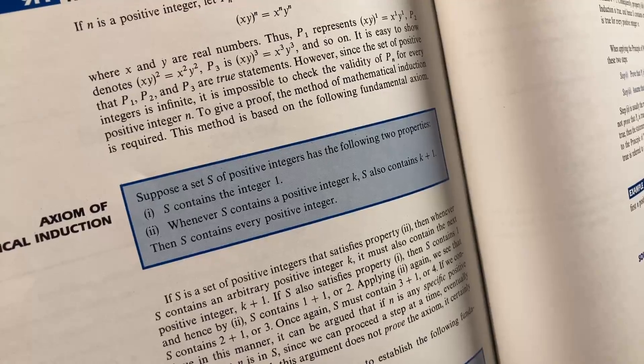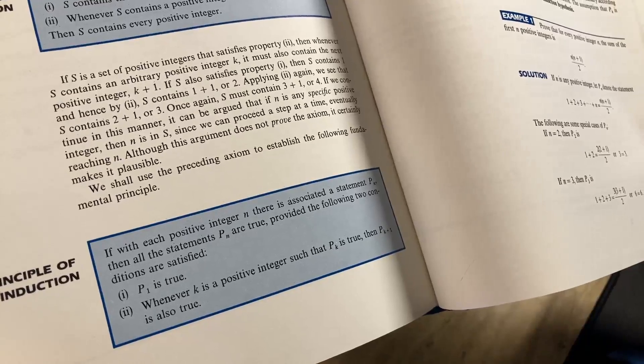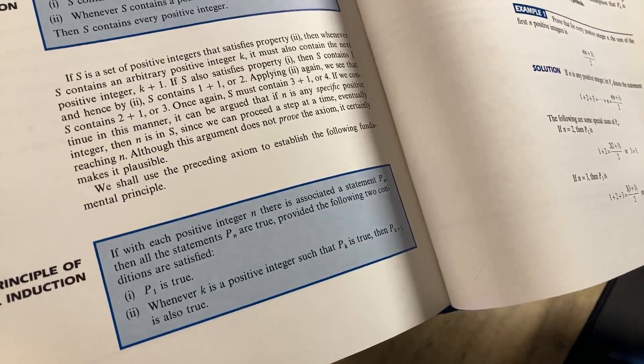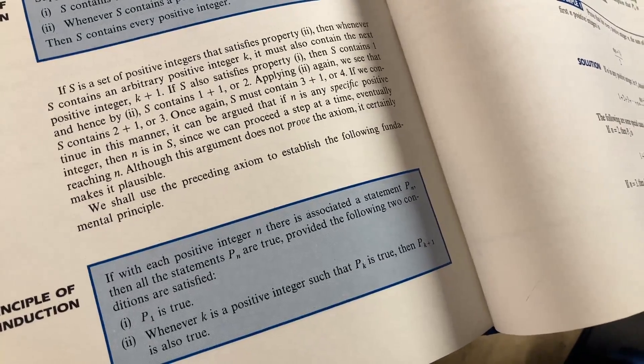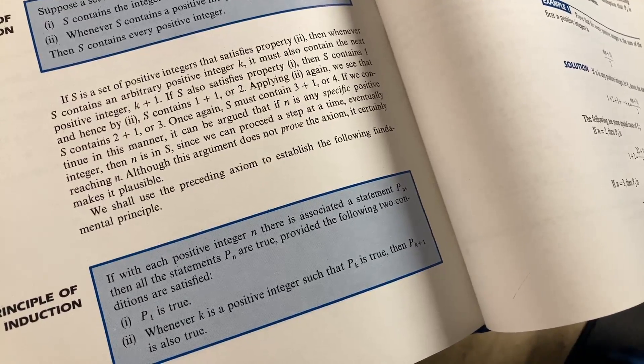Here it tells you what induction is. Suppose S is a set of positive integers. Well, here it is down here. That's the axiom of mathematical induction. Let's look at this one here. If with each positive integer n, there is an associated statement P sub n, then all the statements P sub n are true, provided the following two conditions are satisfied.